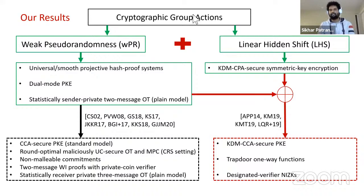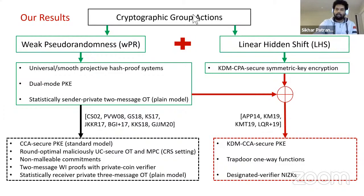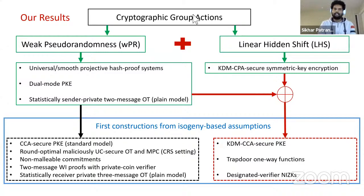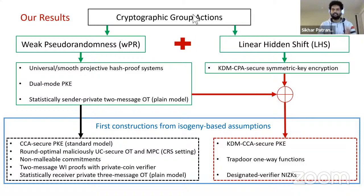If a cryptographic group action is endowed with both weak pseudorandomness and the LHS assumption simultaneously, we can build even more primitives, including key-dependent message CCA-secure public key encryption, trapdoor one-way functions, and designated verifier and non-interactive zero-knowledge proofs. By instantiating our framework from CSIDH and its derivatives, we get the first plausibly post-quantum secure constructions of these primitives from isogeny-based assumptions. The only other post-quantum secure constructions of these primitives are from lattice-based assumptions. Our constructions are more in the feasibility style; efficiency was not our primary concern.